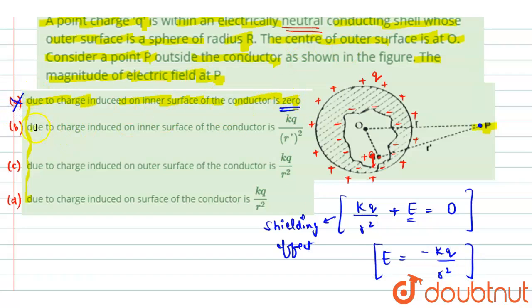Option B we have is due to the charge induced on inner surface of the conductor is KQ by R dash whole square. I'm sorry, this will be R dash square, this will be R dash because this distance is R dash here. Now see, due to the charge induced on the inner surface of the conductor is KQ by R dash square. If we talk about the magnitude, this part given is right only as we have already proved here. So option B is correct.